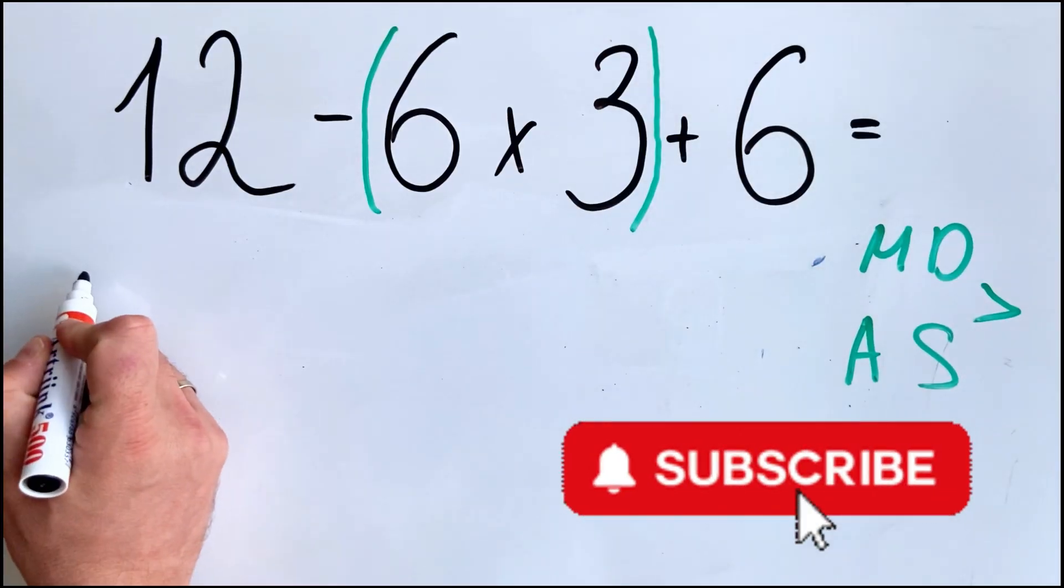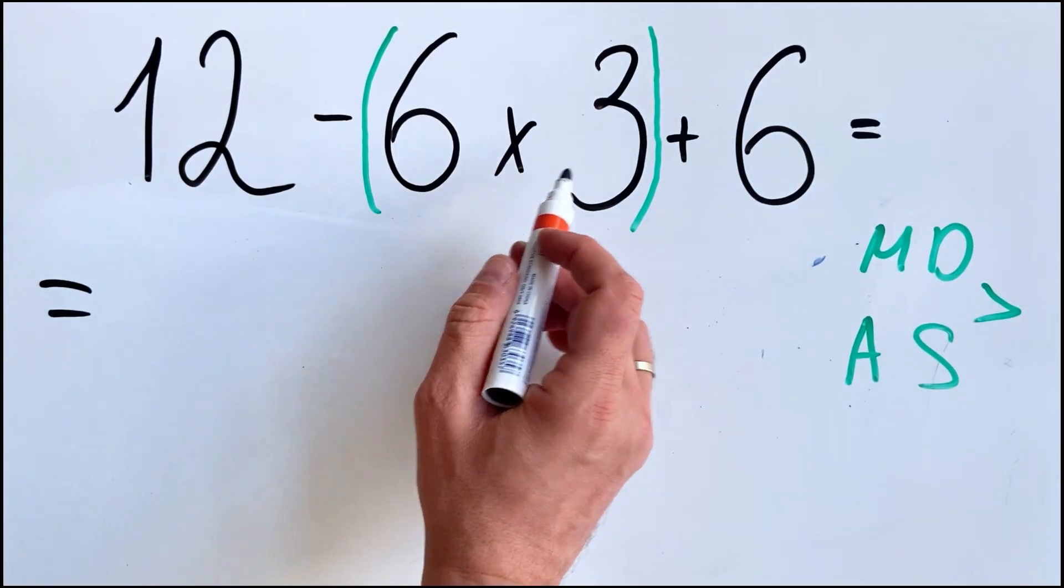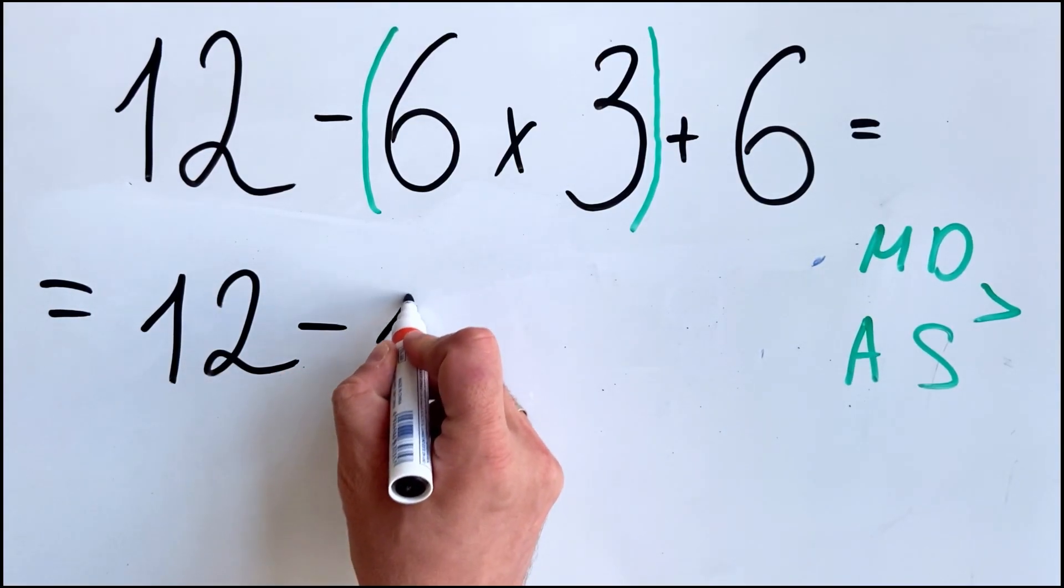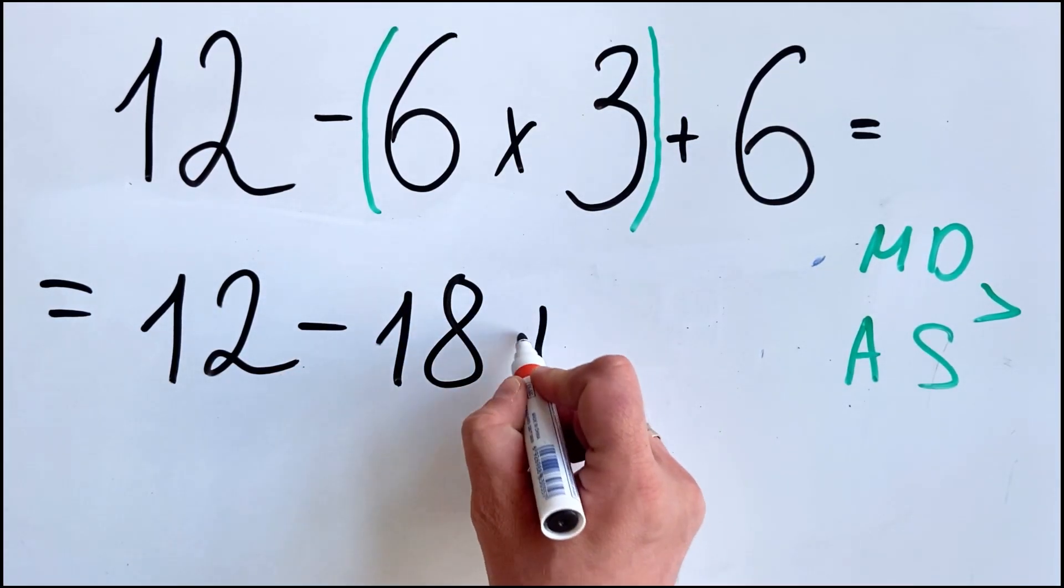So what we get: 6 multiplied by 3 is 18, so we have 12 minus 18 plus 6.